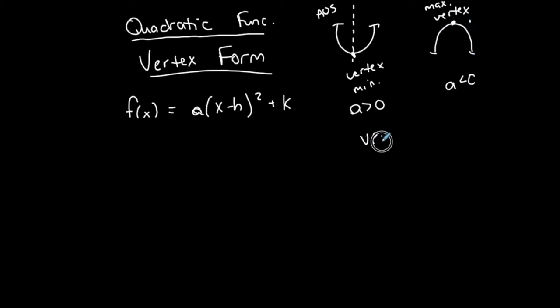The vertex, either a max or a min, is represented by h where h is the x-coordinate and k is the y-coordinate. And the axis of symmetry is always a vertical line, and every vertical line has an equation x equal to a number. And because that vertical line goes through the vertex, the axis of symmetry equation is always x is equal to h, the x-coordinate of the vertex.